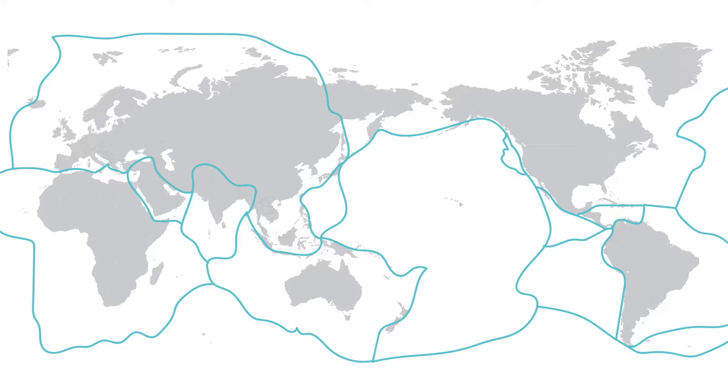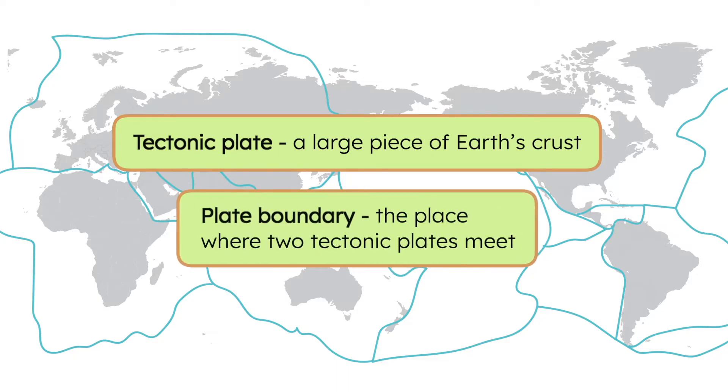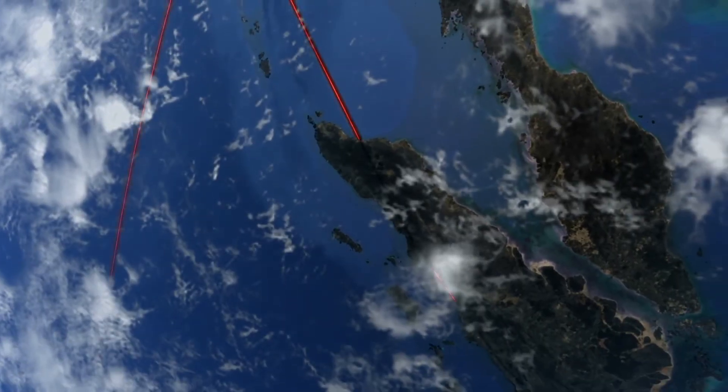Scientists realize the Earth's crust isn't one solid piece of rock. Instead, it's broken into pieces called tectonic plates. The lines formed where we see a lot of earthquakes are actually the places where different plates meet, called plate boundaries. But how does the crust being broken into plates cause earthquakes?